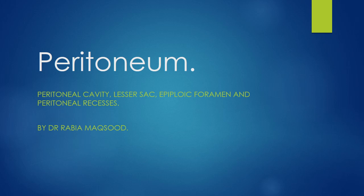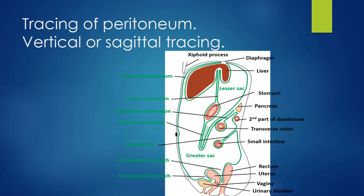Assalamu alaikum students, hope you all are fine. In the previous two classes you had the concept of peritoneum, then the difference between parietal and visceral peritoneum and how the peritoneum is thrown into folds and ligaments. Peritoneum has a complex arrangement and in order to understand it we will trace the peritoneum both in vertical as well as in horizontal sections.